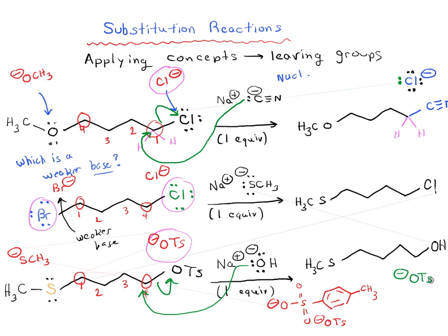So those are three examples of how to use relative basicities, i.e. leaving group abilities, to figure out what products you're going to get when you have multiple groups present which could potentially act as leaving groups. The best way to think through these problems is to think, okay, what's going to be the best leaving group, therefore what's going to be the weakest base, and work from there. And from there you can figure out what's going to be the product of your substitution reaction.